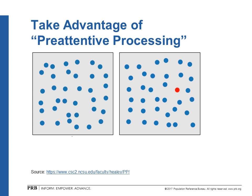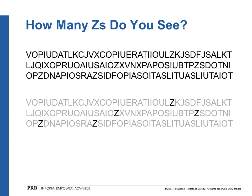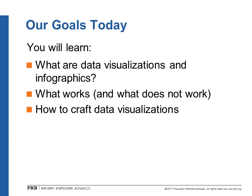Perhaps a more illustrative example: how many Zs do you see in this list of letters on the screen? Clearly, you have to go letter by letter through each line, and you may or may not come up with the right number. But if we use a data visualization technique — graying out information that's not important — it's really clear that there are five Zs within that chunk of text. That's what I want you to keep in mind: one reason we do data visualization is to take advantage of pre-attentive processing. Our goals today are to talk about what data visualizations and infographics are, what works and what does not work, and how to craft data visualizations in terms of workflow and design principles.